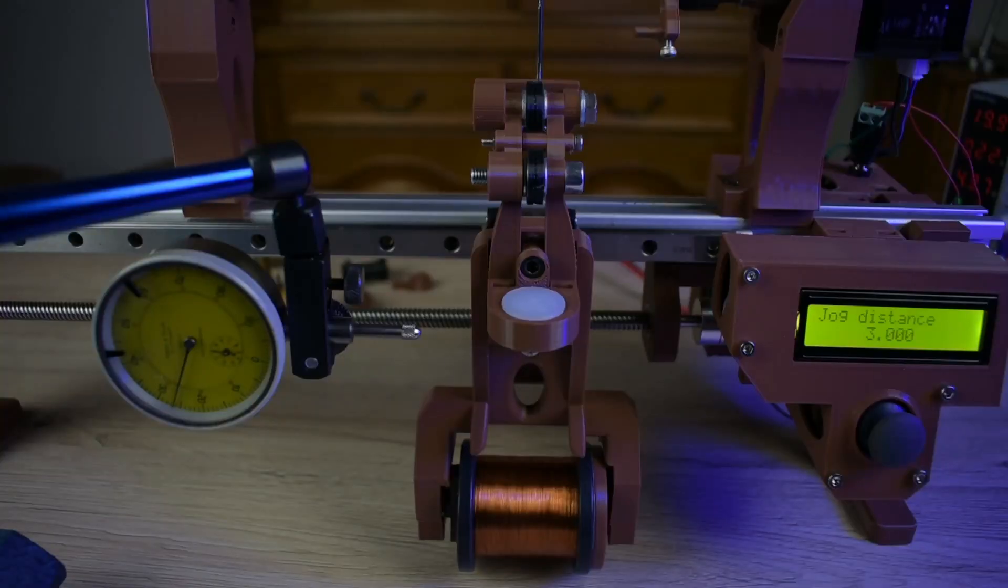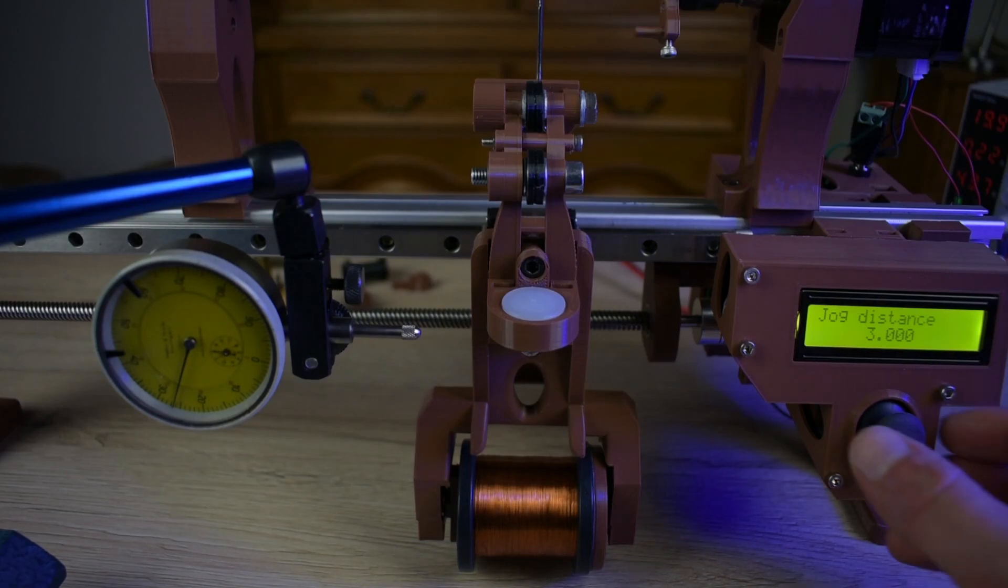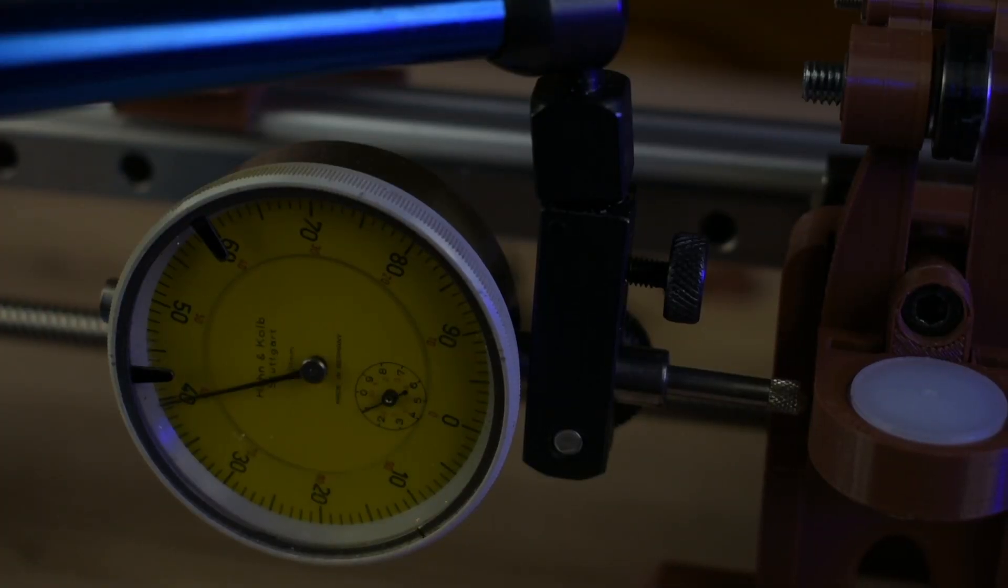So, to measure the backlash in the linear axis you need a dial indicator to measure the distance the axis is traveling. The first step is to jog it in one direction, zero it out and then jog it in the opposite direction.